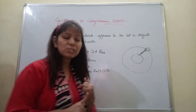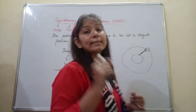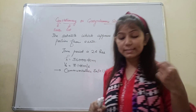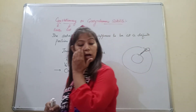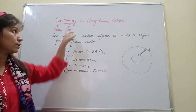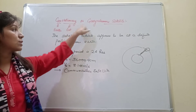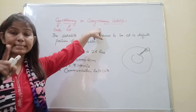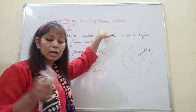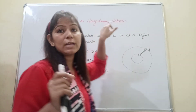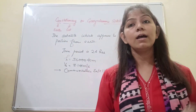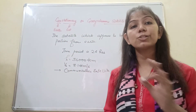The first geostationary satellite was known as Telstar, launched by the USA in 1962.